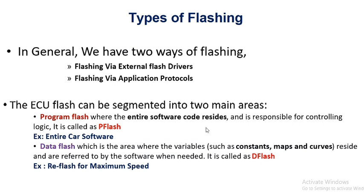That speed restriction can be done through application protocols — that is D flash — because you don't want to change the entire software, you just want to change a calibration value or set a maximum threshold for speed. For that, data flash is preferable since there is not much data being transmitted, just a particular value being updated. Also, going for P flash in this case would not be economical.